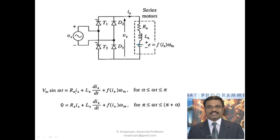This is the armature circuit — Ra, La, and E. The difference is that here E is variable. In the separately excited DC motor, the back EMF E is constant. But here, E varies with respect to speed and armature current Ia. Whenever the current changes, E also changes.